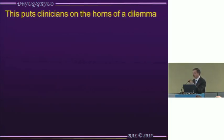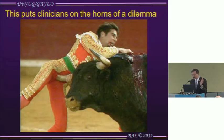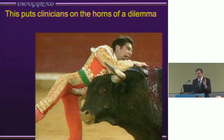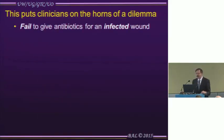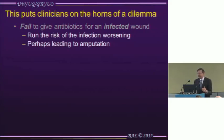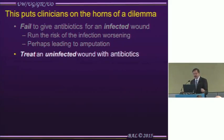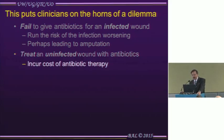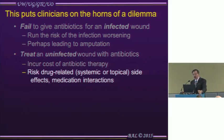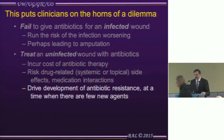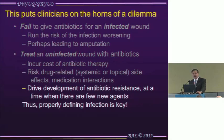That puts clinicians on the horns of a dilemma. If you fail to give antibiotics and the wound was actually infected, you run the risk that infection worsens — and in the case of a diabetic foot infection, it may lead to amputation. On the other hand, if you treat an uninfected wound with antibiotics, you incur the cost of therapy, all the drug-related risks — systemic or topical drugs can cause adverse effects and medication interactions — and you drive the development of antibiotic resistance.